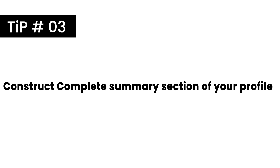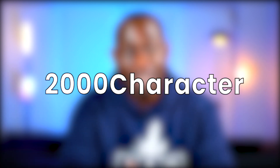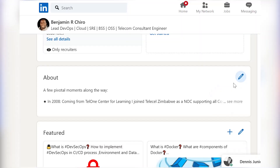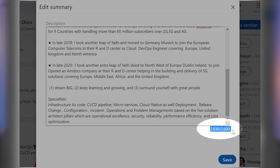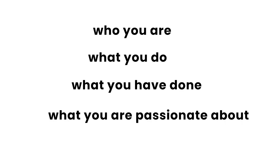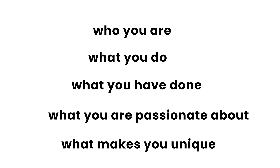Tip number three: construct a complete summary section of your profile. The LinkedIn summary section is the next most important part of your profile behind the headline. It gives you 2,000 characters to work with. The summary section is your professional elevator pitch. It should expand on your headline, highlighting your specialties, career experience, network, and thought leadership. This is where you really sell yourself to potential connections, recruiters, companies, and human resources — describing who you are, what you do, what you've done, what you're passionate about, and what makes you unique. It's also a great place to list all your tech skills and take advantage of optimization opportunities.